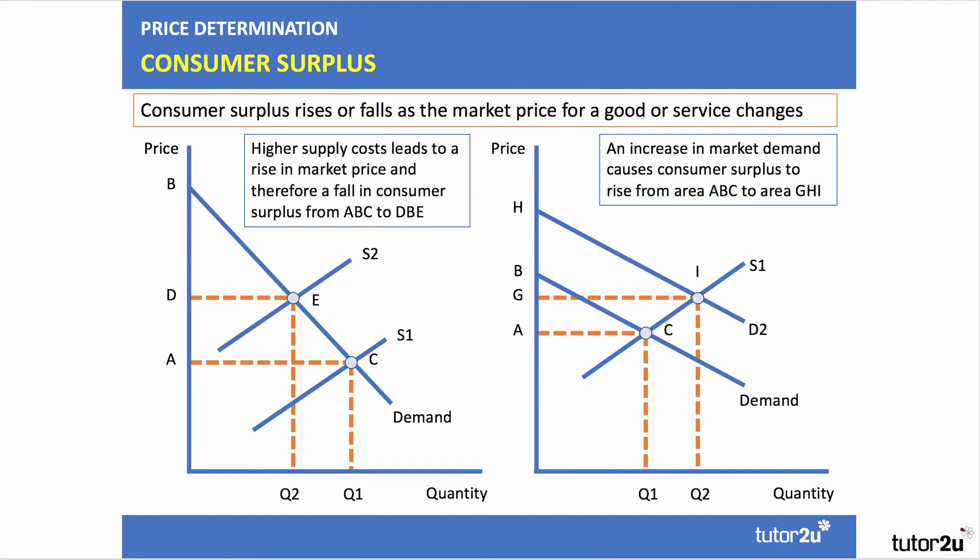Shifts in the conditions of demand and/or supply will bring about a change in price and quantity. On the left-hand side of the diagram, we see the effect of an inward shift of supply brought about by higher supply costs. Those increased supply costs increase the price from A to D and the quantity consumed goes down from Q1 to Q2. Therefore, consumers paying more and consuming less, the consumer surplus falls from area A, B, C to area D, B, E.